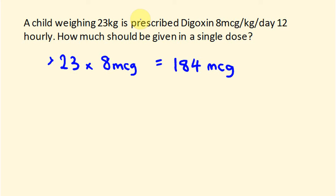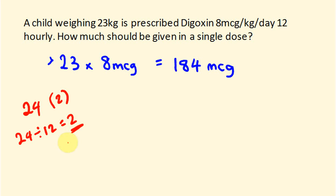Now they're going to get this 12 hourly. There are 24 hours in a day, and 12 hourly means they're going to get it twice for the day. Maybe you're giving it at 6 o'clock in the evening and then 6 o'clock in the morning. Every 12 hours is twice a day — 24 divided by 12 equals 2. So if you're working out how much should be given in a single dose, the kid is getting 2 doses all up. We divide our answer by 2, so the kid should get 92 micrograms every dose.